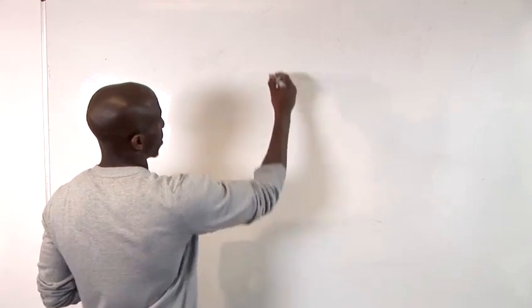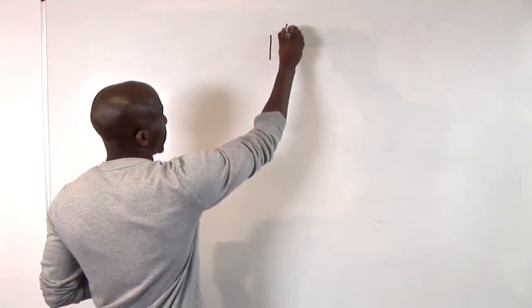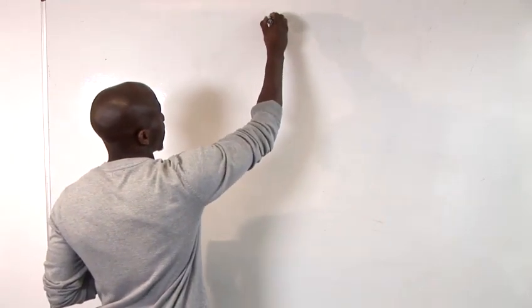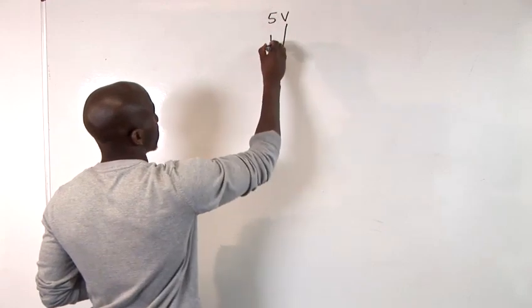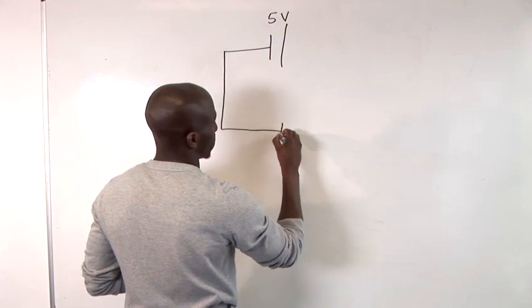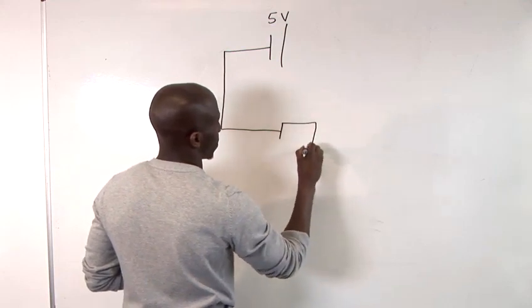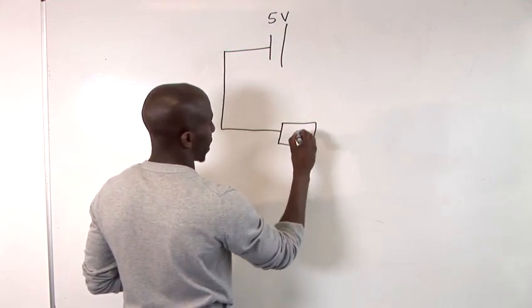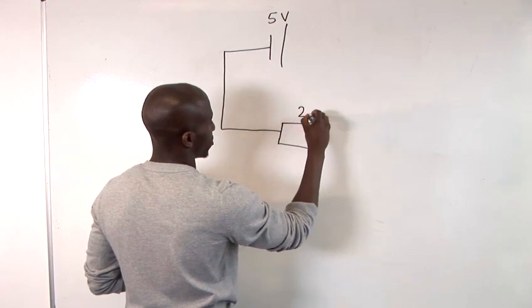So if you take a basic circuit, we've got 5 volts here, and we have a 2 ohm resistor.